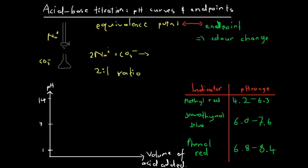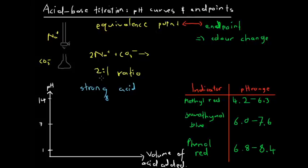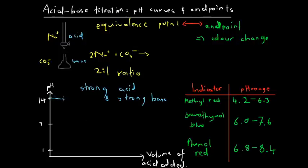If we have a titration between a strong acid and a strong base, we draw something called a pH curve, which shows pH with respect to the volume of acid added from the burette, assuming the acid is in the burette and the base is in the flask. As we begin to add acid to the base, the pH starts decreasing from 14, then drops very sharply near the equivalence point, and then levels out close to 1 as we continue adding strong acid.